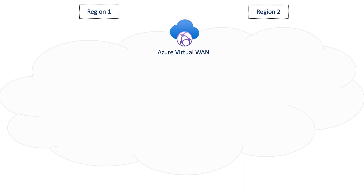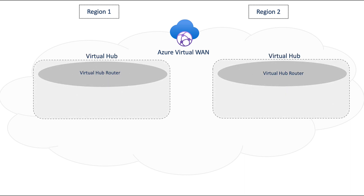Let's start with a quick primer on Virtual WAN. Azure Virtual WAN is a global networking service that uses virtual hubs to provide a regional hub-and-spoke topology for connecting into and out of Azure. All virtual hubs within a virtual WAN are automatically globally connected using the Azure Virtual WAN backbone. These virtual hubs provide network service endpoints to allow for multiple connectivity options.